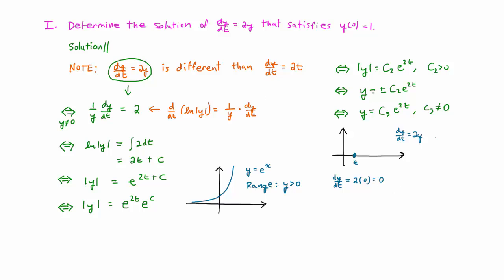This tells us that the tangent line to the graph at that point must be horizontal. Actually, if we move to any other point on the t-axis, the tangent line would still be horizontal because according to our differential equation, the slope is always twice the y-coordinate, and the y-coordinate is always zero along the t-axis.